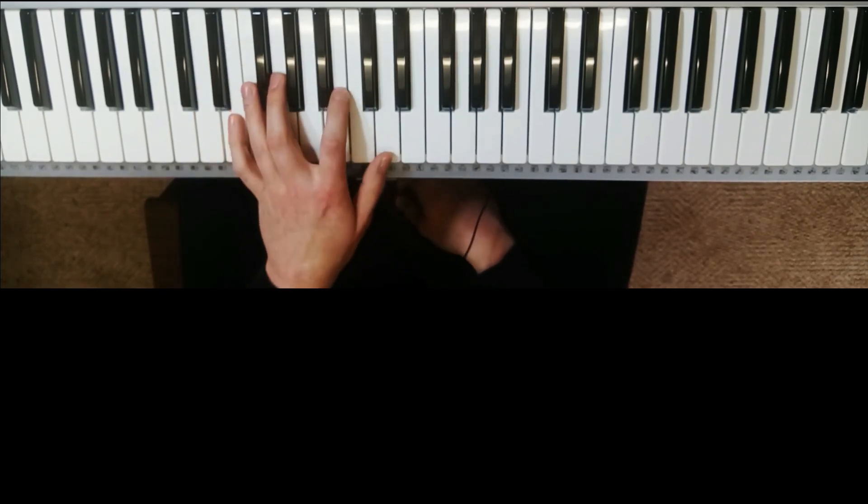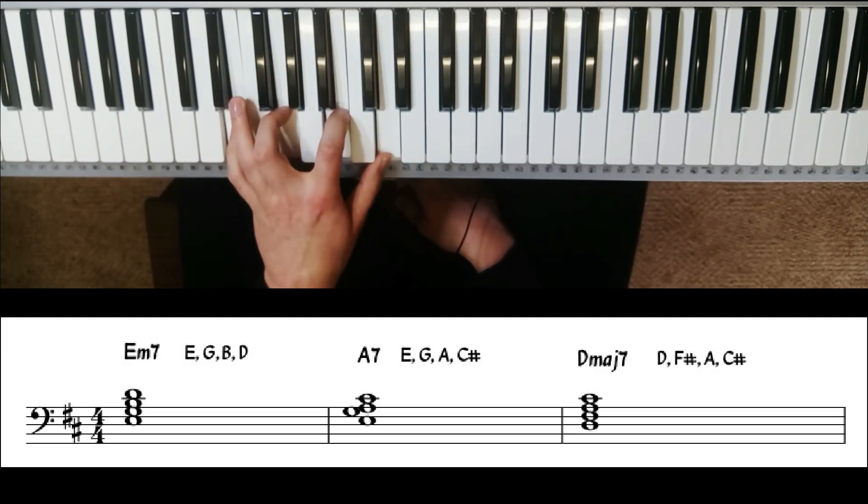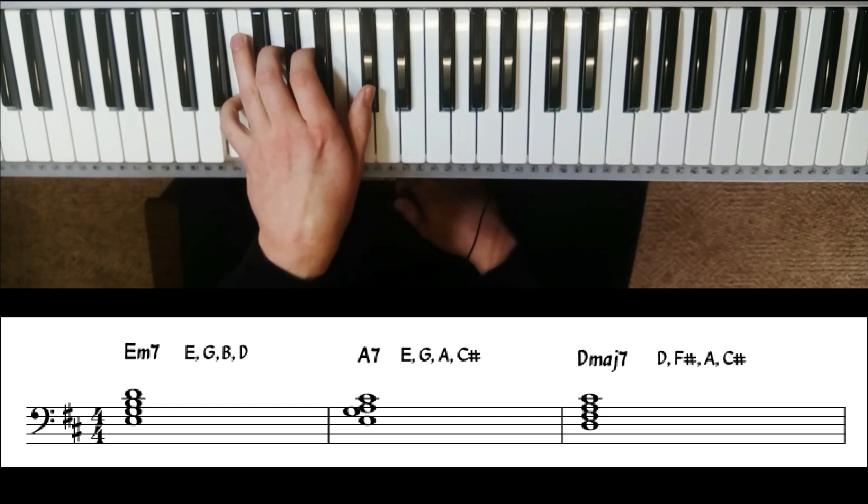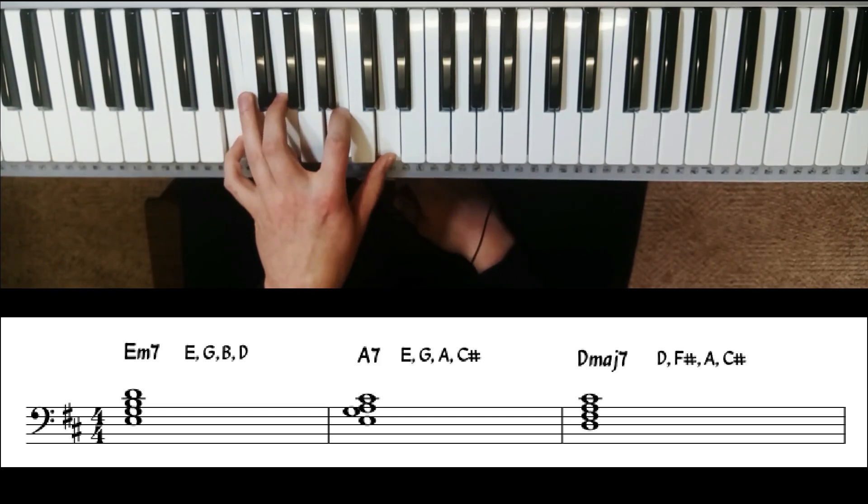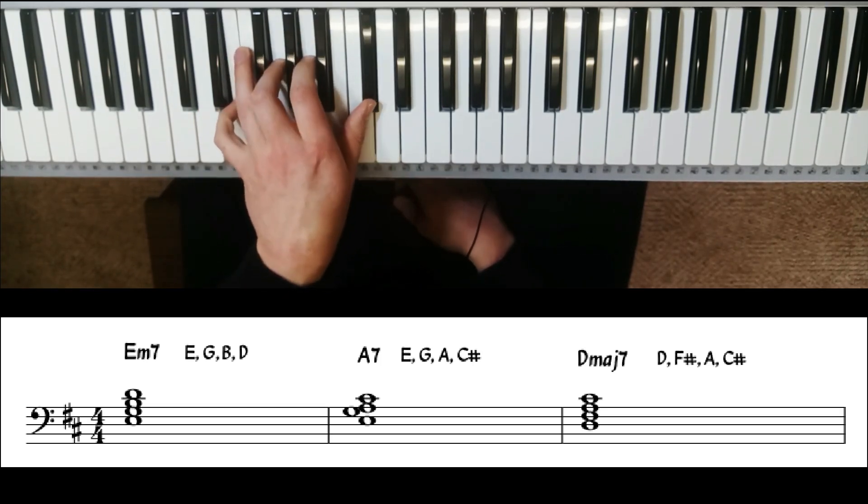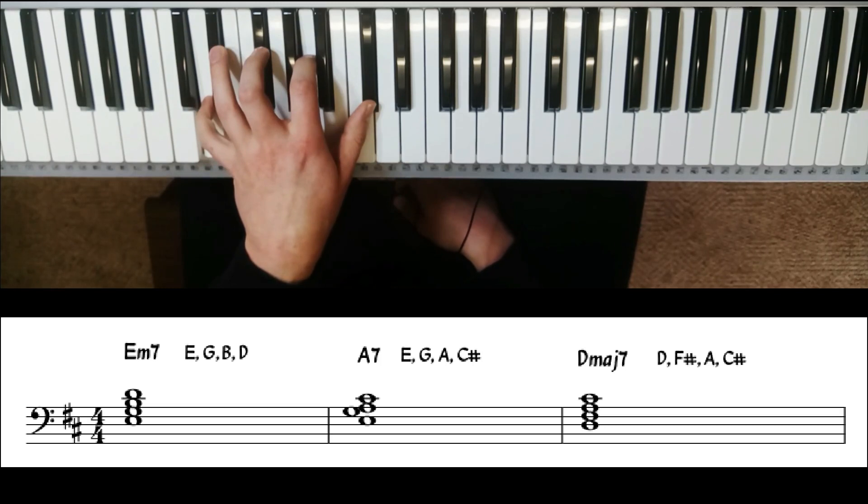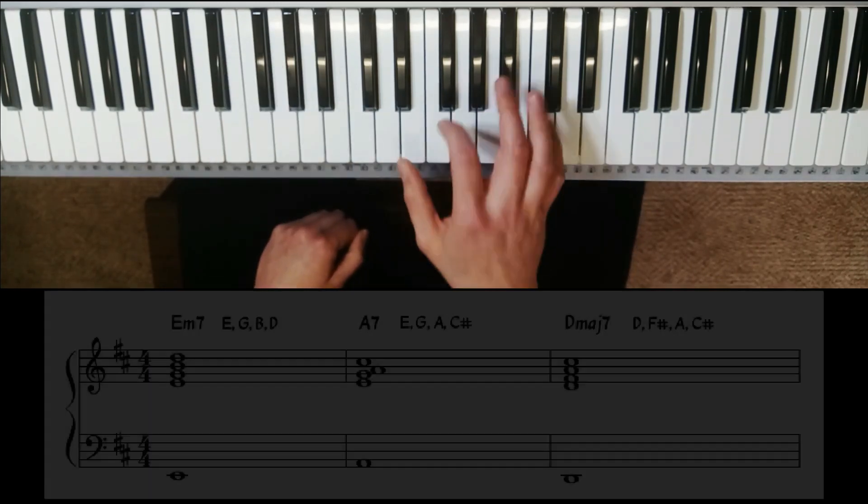And once again that same little trick of moving the top two notes down. E minor 7: B goes down to an A, D goes down to a C sharp. A7: E goes down to a D, G goes down to an F sharp. D major 7. And with some bass notes.